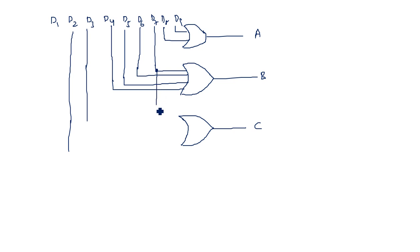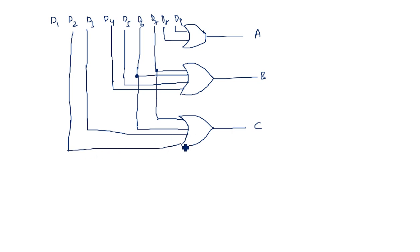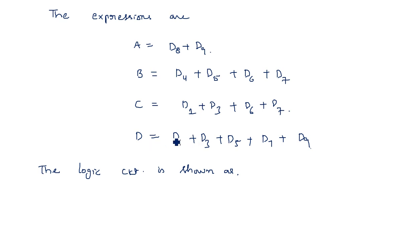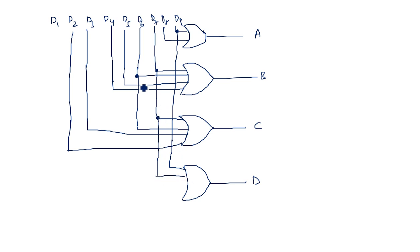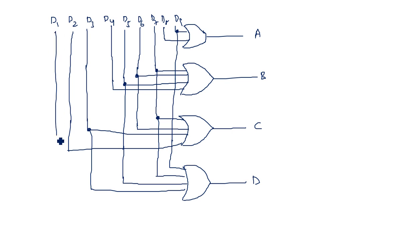For C, the inputs are D2, D3, D6, and D7. For D, the alternating numbers D1, D3, D5, D7, and D9 are the inputs to a five-input OR gate.